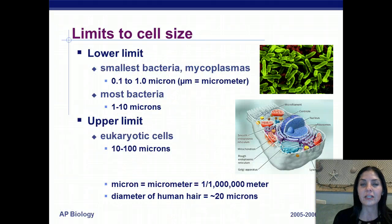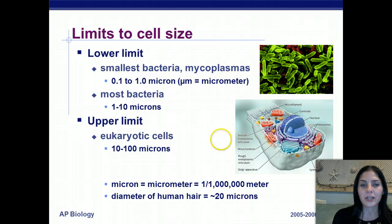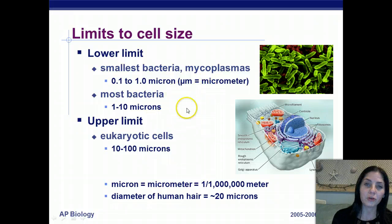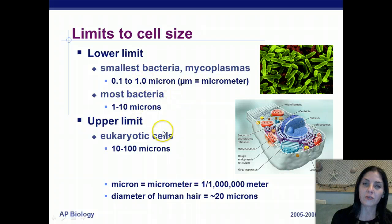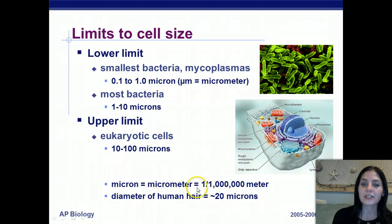There are limits to cell size — both a lower limit and an upper limit. Prokaryotic cells are much smaller than eukaryotic cells. The smallest cells are mycoplasmas, ranging from 0.1 to 1 micron. Most bacteria are between 1 to 10 microns. Eukaryotic cells are 10 to 100 microns. A micrometer equals one one-millionth of a meter. The diameter of a human hair is 20 microns, for reference.